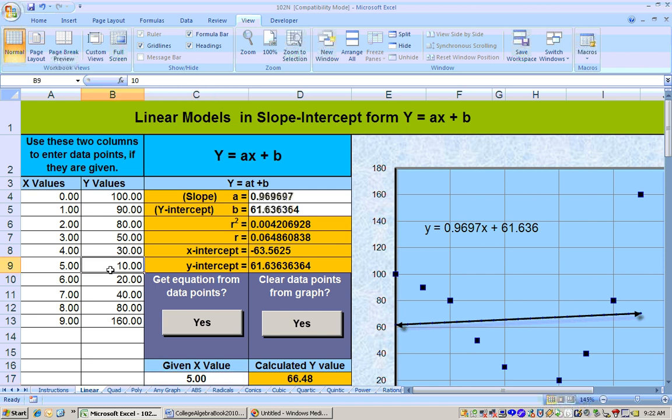Well, the actual is 10, so 66.48 is way off, and this is not a good model at all. You can tell by the correlation coefficient being so close to zero, it's not 0.7 or higher, so this is a terrible relationship, not a good linear relationship between these variables at all.